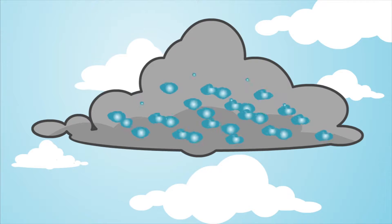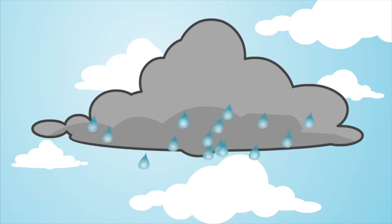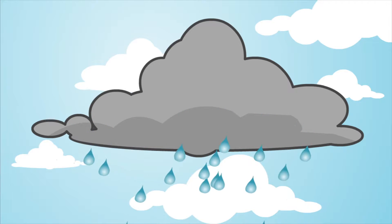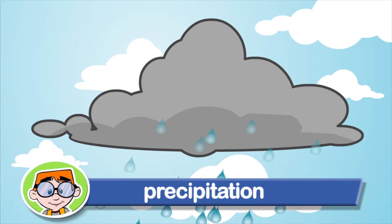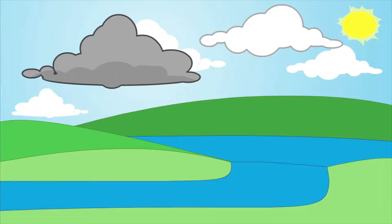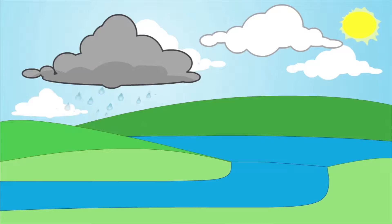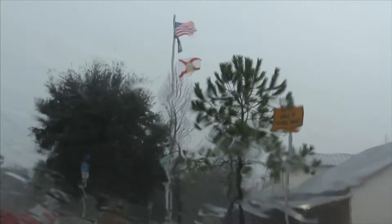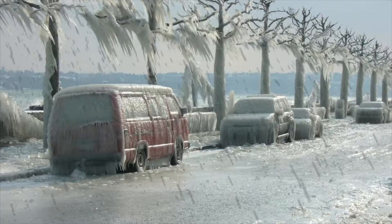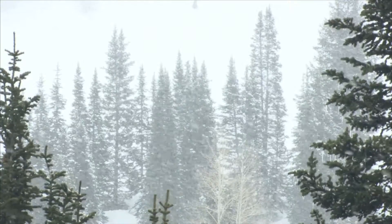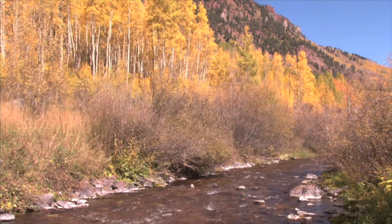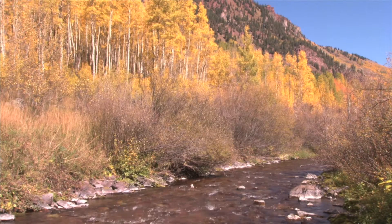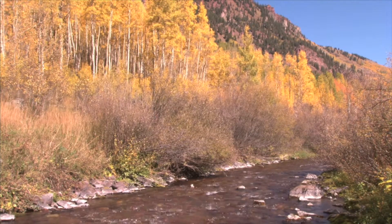If there's enough water in the clouds, the water will fall to the earth. We call it precipitation. Precipitation happens when there is so much water packed together that the air can't hold it anymore. The clouds get heavy, and water falls back to the earth as rain, hail, sleet, or snow. Some of the rain will collect in the ground to begin the water cycle all over again.